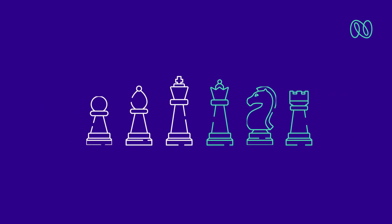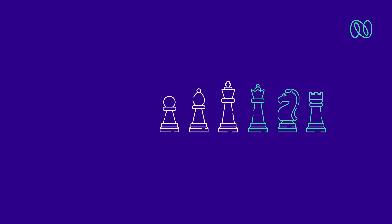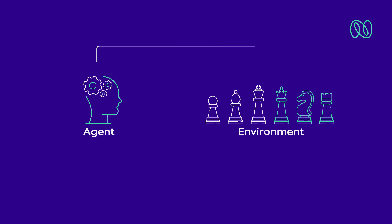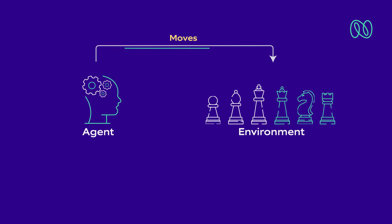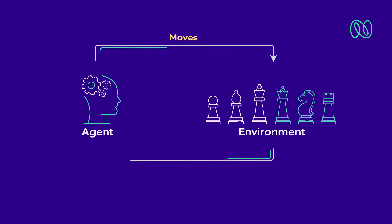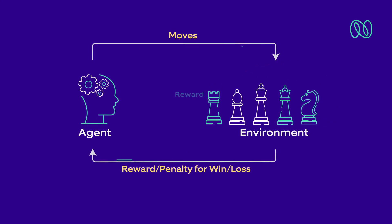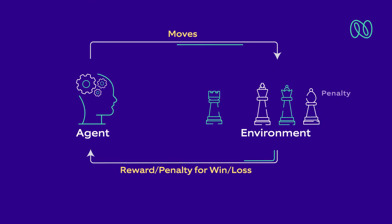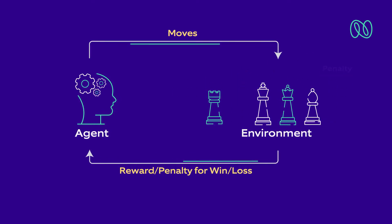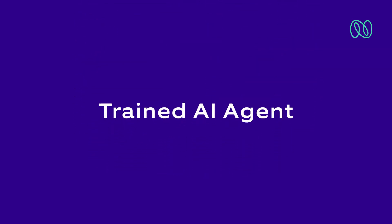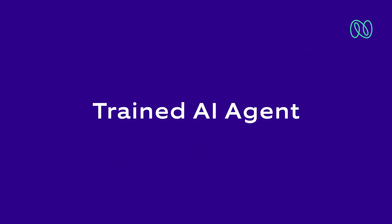Think of chess. Each move on the chessboard can lead to several possible outcomes. The AI agent decides a move, and the possible outcomes are calculated. If the move is good, the agent gets a reward; if not, a penalty. Over a period of time, the AI agent is trained, and it can make good decisions in unforeseen situations.